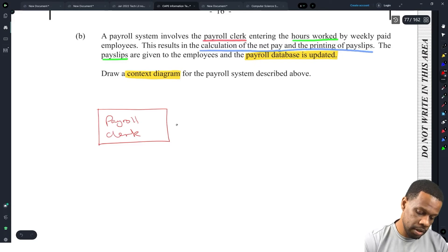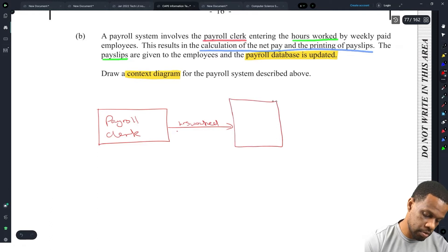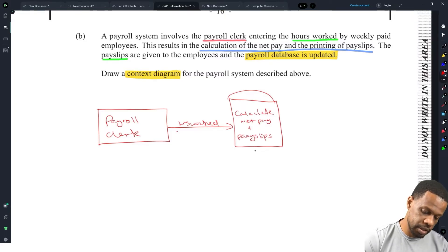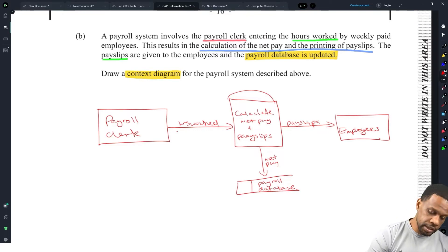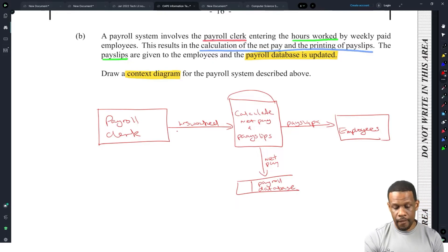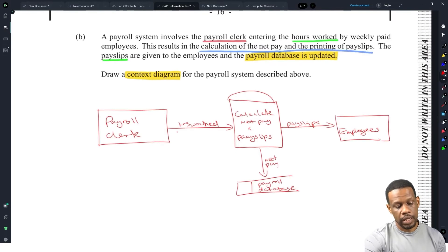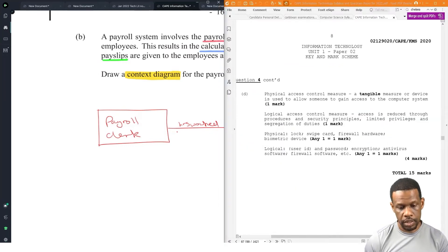So the payroll clerk enters the hours worked into a process that is going to calculate net pay and payslips. The payslips go to the employees, and the payroll database is updated with the net pay. Payroll clerk gets the hours worked, calculate net pay, this results in the calculation and printing of payslips. They clearly said a context diagram. Let's see how they navigated this.